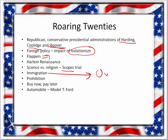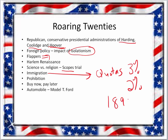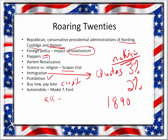The restrictive immigration quotas allowed only three percent of the people from a given nation already living in America to immigrate each year — then lowered to two percent, using 1890 census numbers when there were very few Southern and Eastern Europeans, making it clearly nativist and anti-immigrant. Prohibition led to speakeasies, bathtub gin, Al Capone, and gangsters. A lot of buying on credit — buy now, pay later — and the assembly line was used for the Ford Model T.